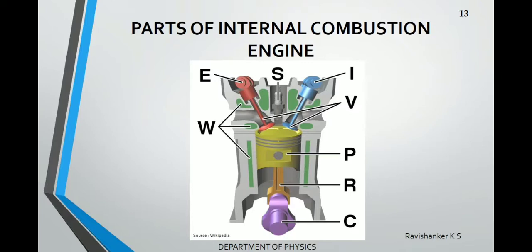The piston and crankshaft are connected by a rod called the connecting rod, marked as R in the figure. The crankshaft is an important part of the engine — it converts the linear motion of the piston into rotatory motion, which in turn helps in the rotation of wheels in cars and jeeps, or the rotation of propellers in aircraft. The crankshaft is first connected to the flywheel, then the clutch and gear come into action. The next part is the water jacket, marked as W. It is a water-filled jacket and its aim is to maintain the temperature of the engine.